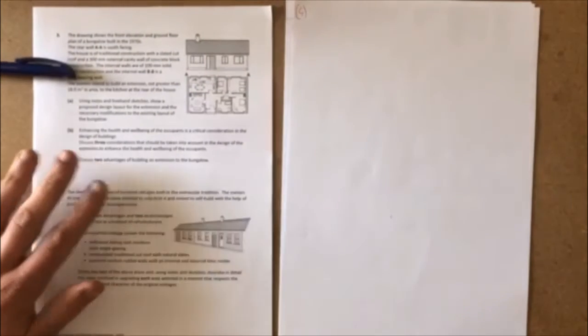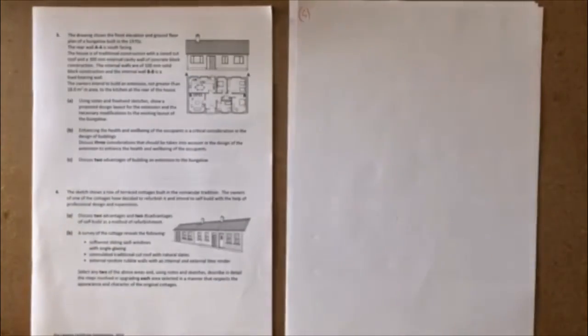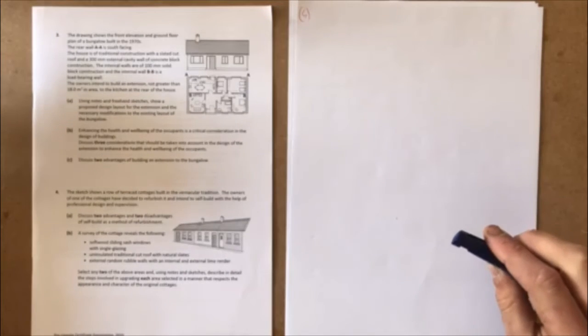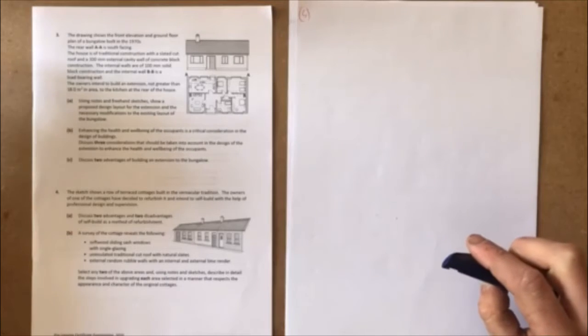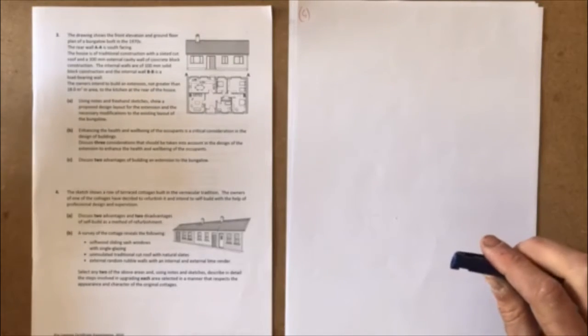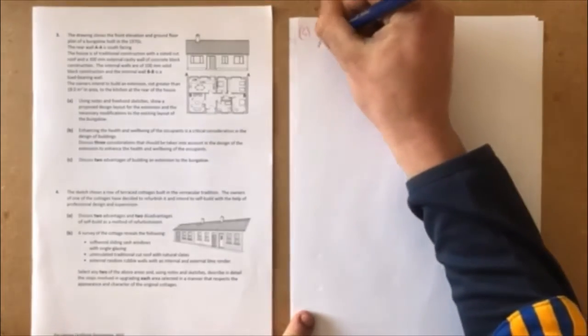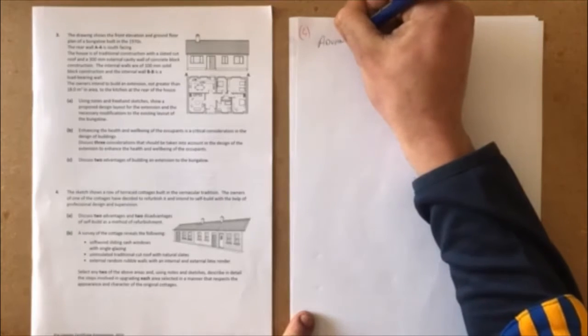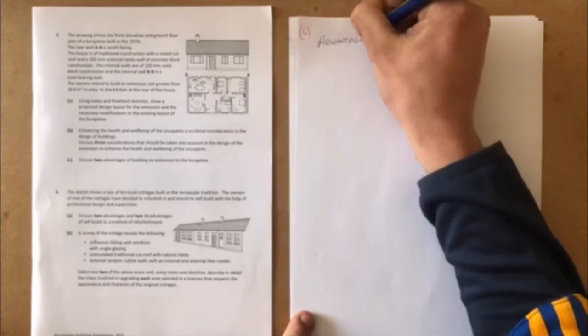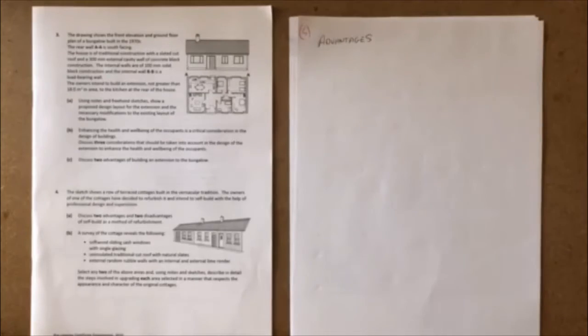2020 mock paper question four. The sketch shows a row of terrace cottages built in the vernacular tradition. The owners of one of the cottages have decided to refurbish it and intend to self-build with the help of professional design and supervision. Discuss two advantages and two disadvantages of self-build as a method of refurbishment.